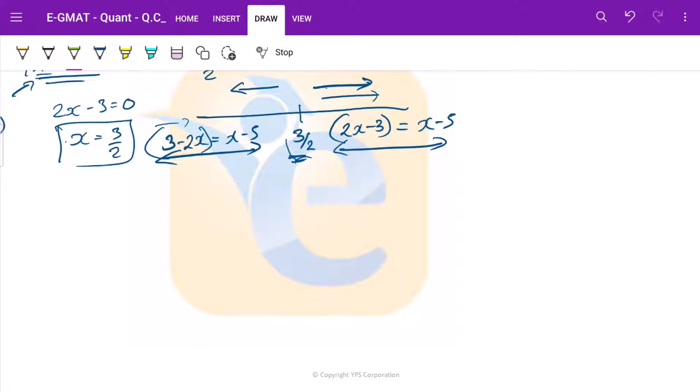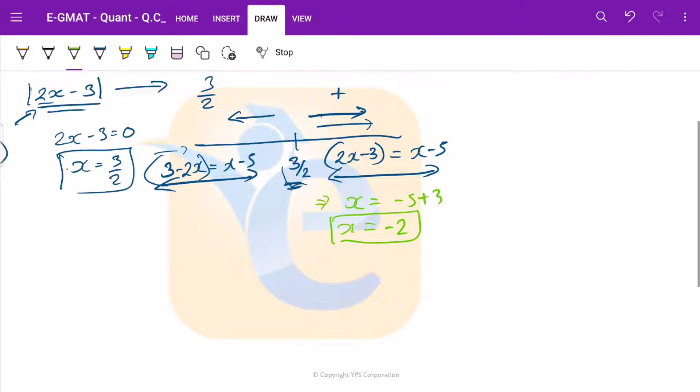If we try and get the value of x here, this becomes 2x - x, that is x = -5 + 3 = -2. So we get x as -2 here. But the catch here is that x was supposed to be positive. That was our range and here it comes negative. So this is not a solution.